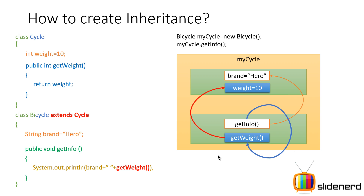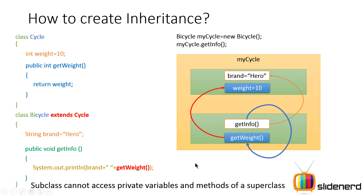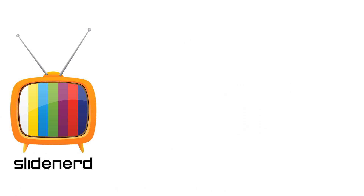Remember one key rule: what is common keep in the superclass, what is very specific keep in your subclass. Your subclass will have everything the superclass has, but remember — the subclass cannot access private variables and private methods of a superclass. It can access public, protected, and default members with no problems, but not private ones.